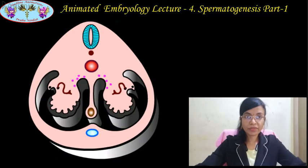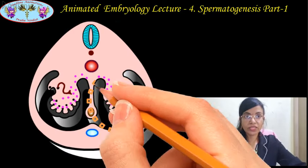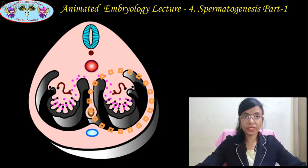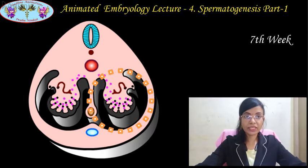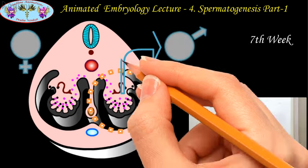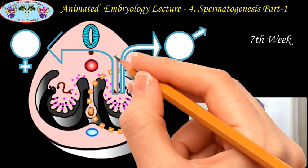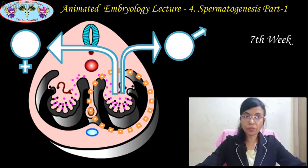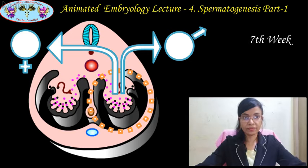In the previous sessions, we have seen that by the sixth week, the primordial germ cells invade the gonads. And by the seventh week, the primordial germ cells induce the indifferent gonads to differentiate into a testis or ovary, depending upon the sex of the embryo. So differentiation in the gonads begins by the seventh week.